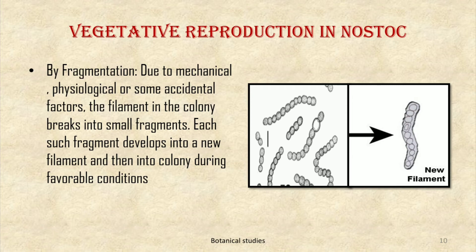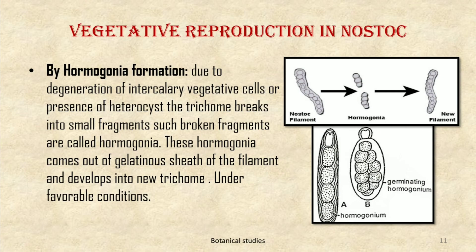First, vegetative reproduction in Nostoc by fragmentation: due to mechanical, physiological, or some accidental factors, the filament in the colony breaks into small fragments. Each such fragment develops into a new filament and then into a new colony during favorable conditions.